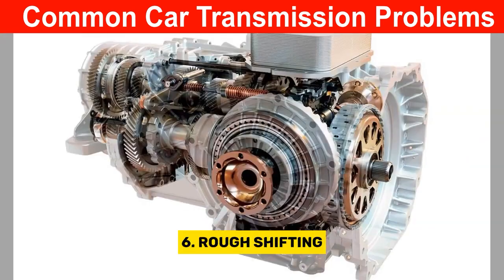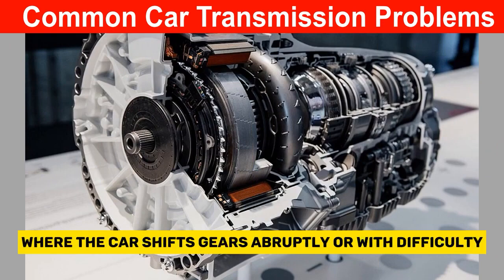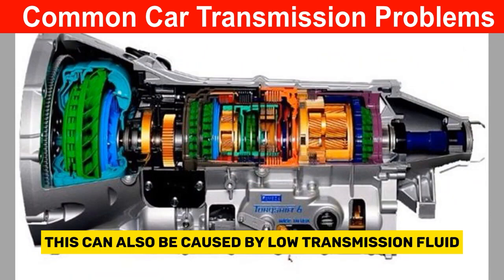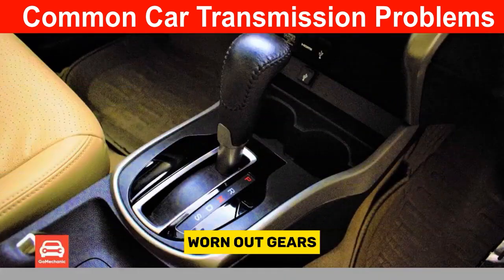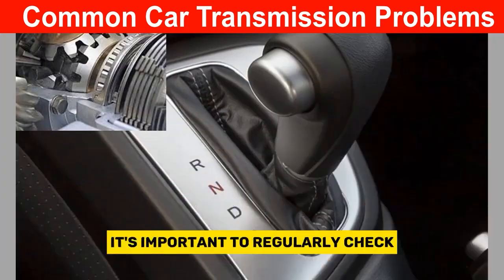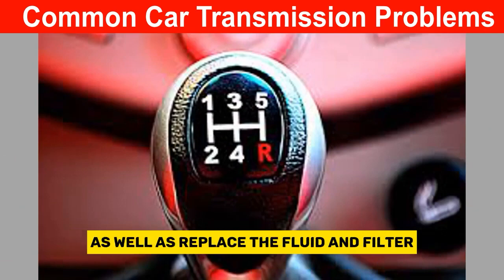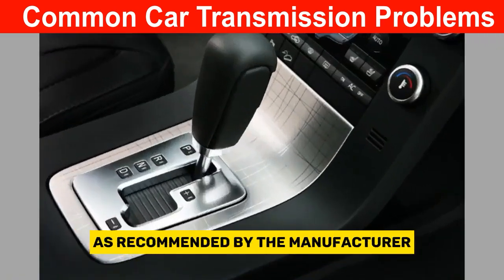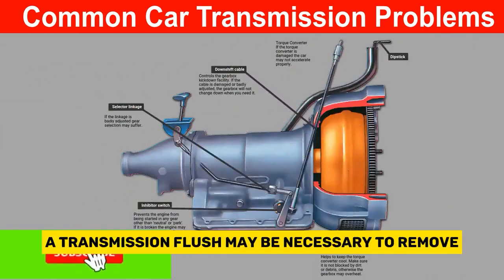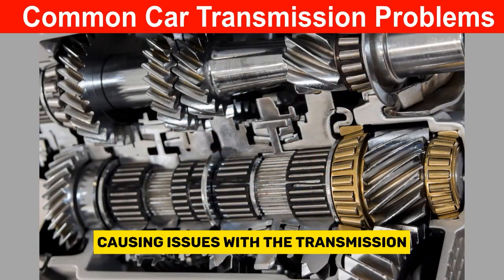6. Rough Shifting. Another common issue is rough shifting, where the car shifts gears abruptly or with difficulty. This can be caused by low transmission fluid, worn-out gears, or a faulty solenoid. To address this problem, it's important to regularly check and maintain the transmission fluid levels, as well as replace the fluid and filter as recommended by the manufacturer. Additionally, a transmission flush may be necessary to remove any built-up debris or contaminants that could be causing issues with the transmission.